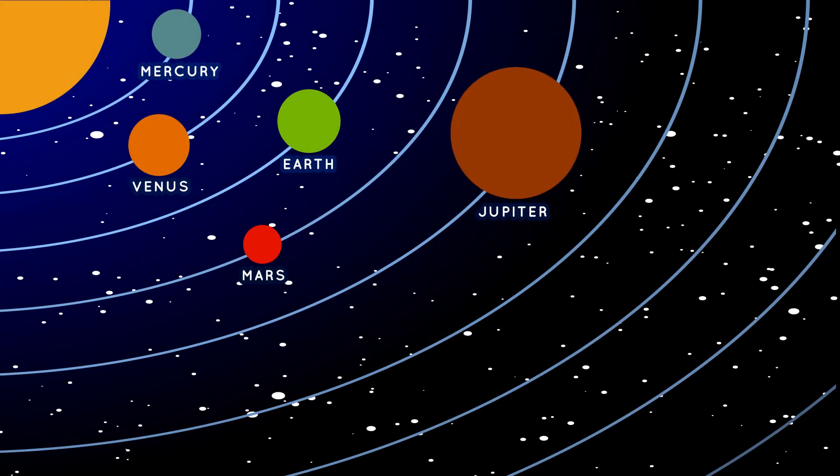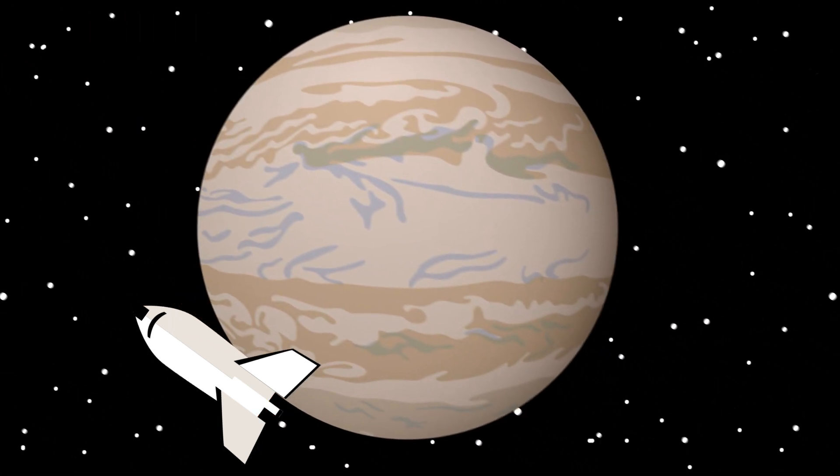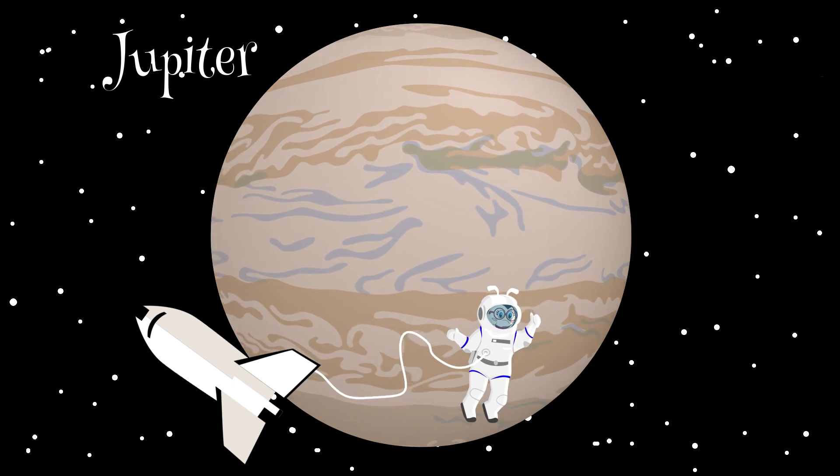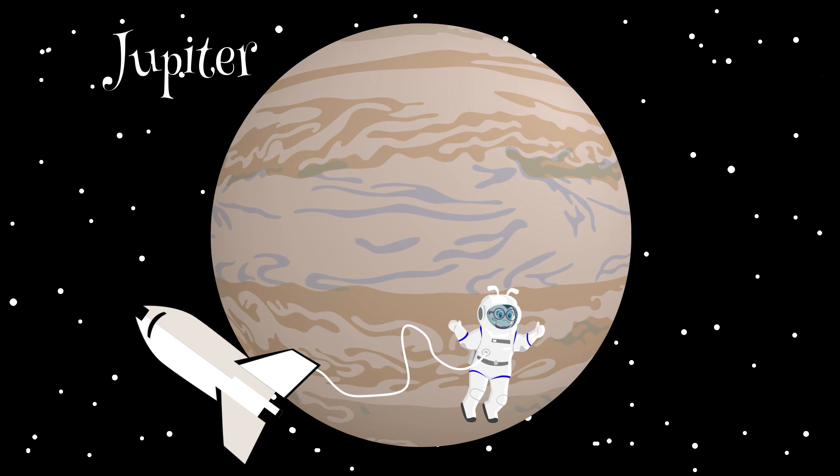Jupiter is the fifth planet from the sun and the largest in our solar system. It is made primarily of gases and is therefore known as a gas giant. No one knows for sure what the surface of Jupiter really looks like.